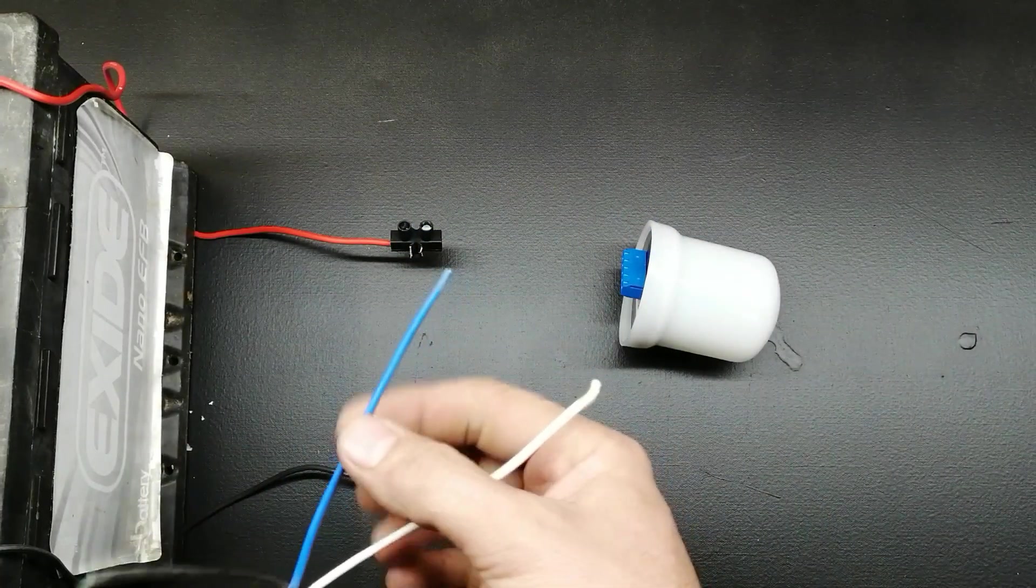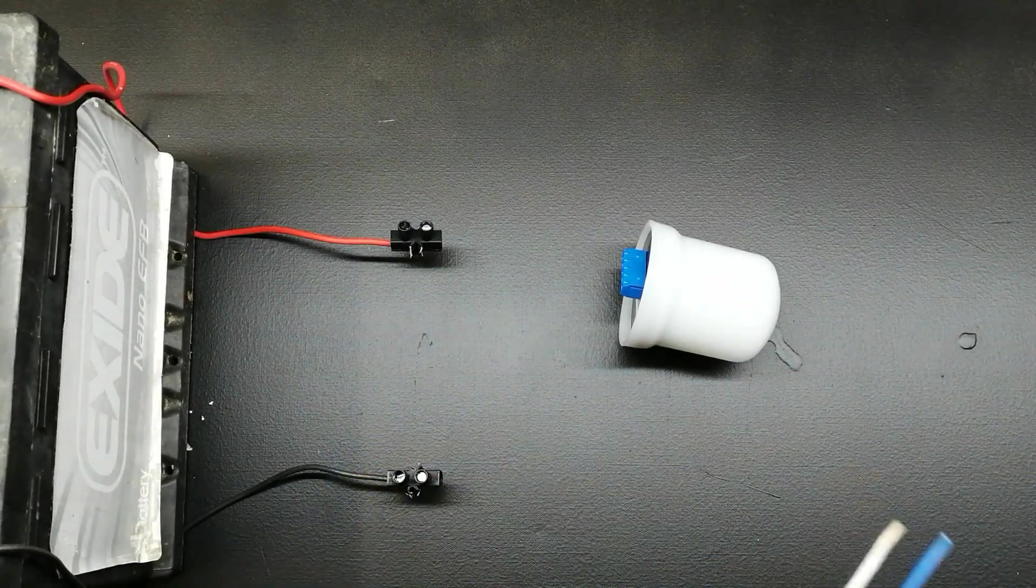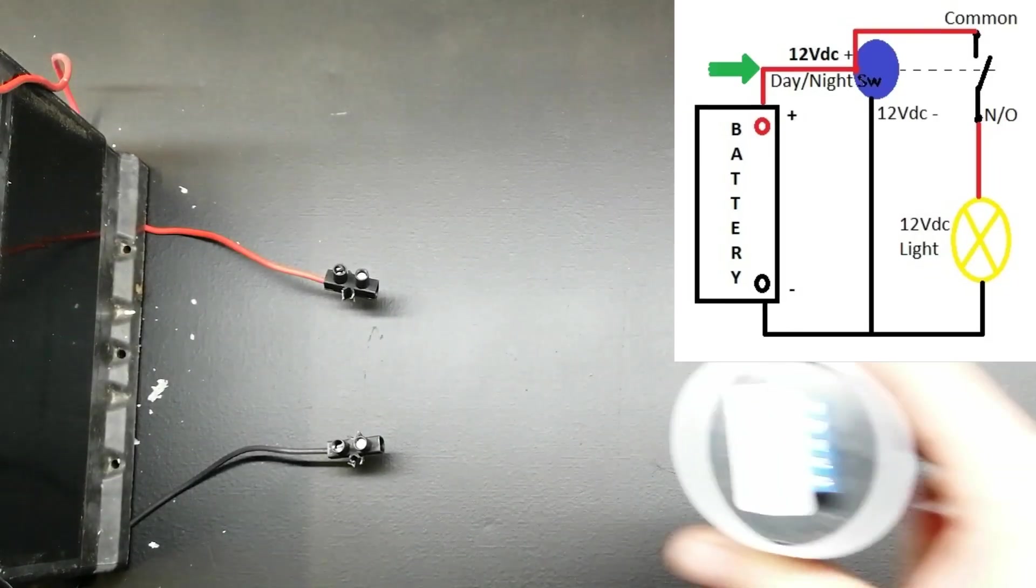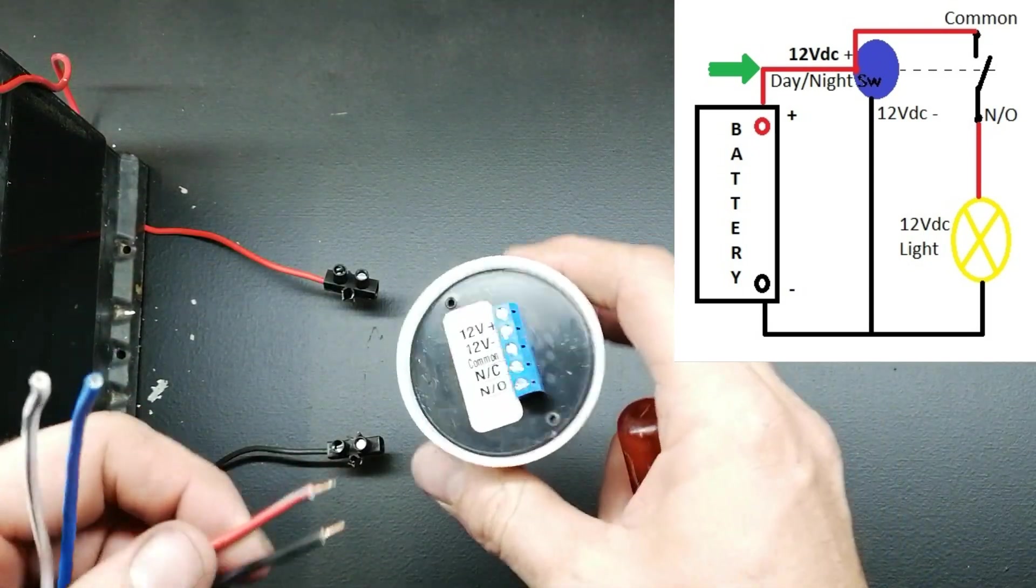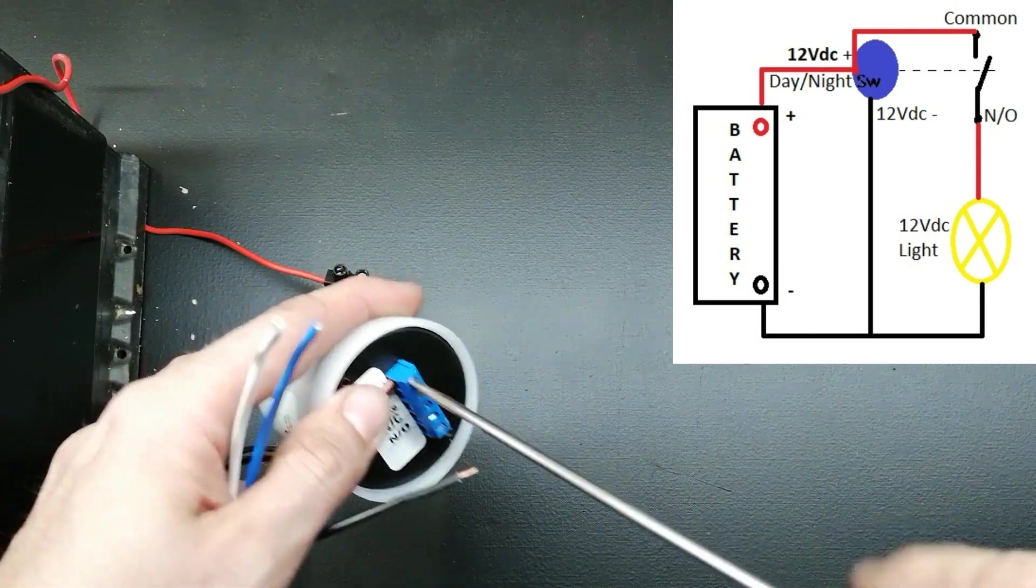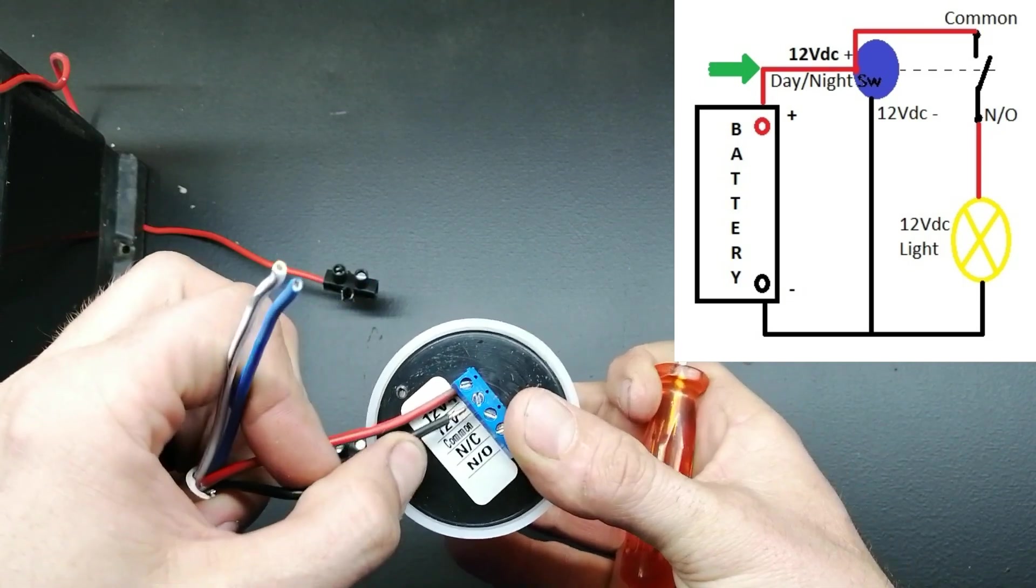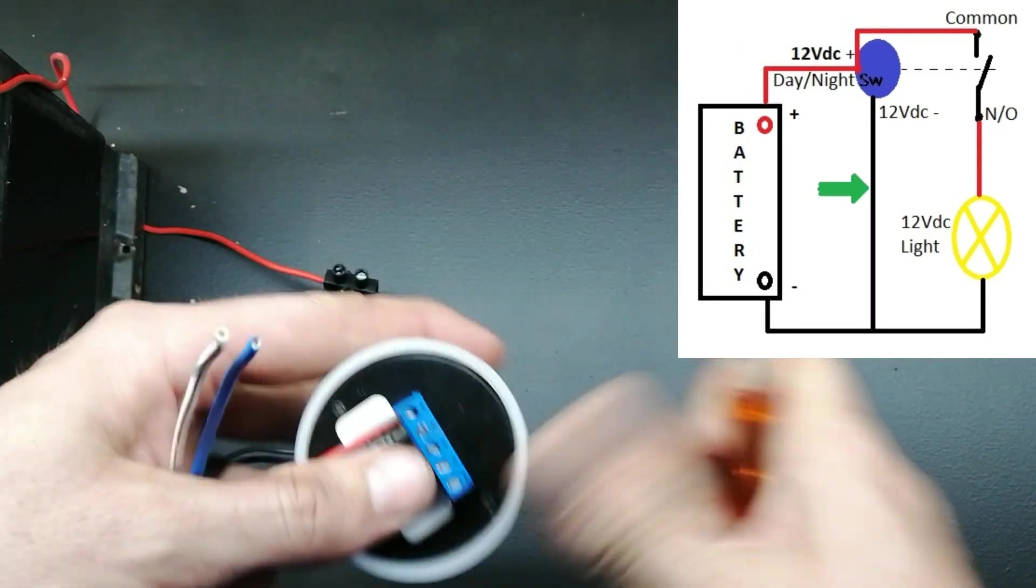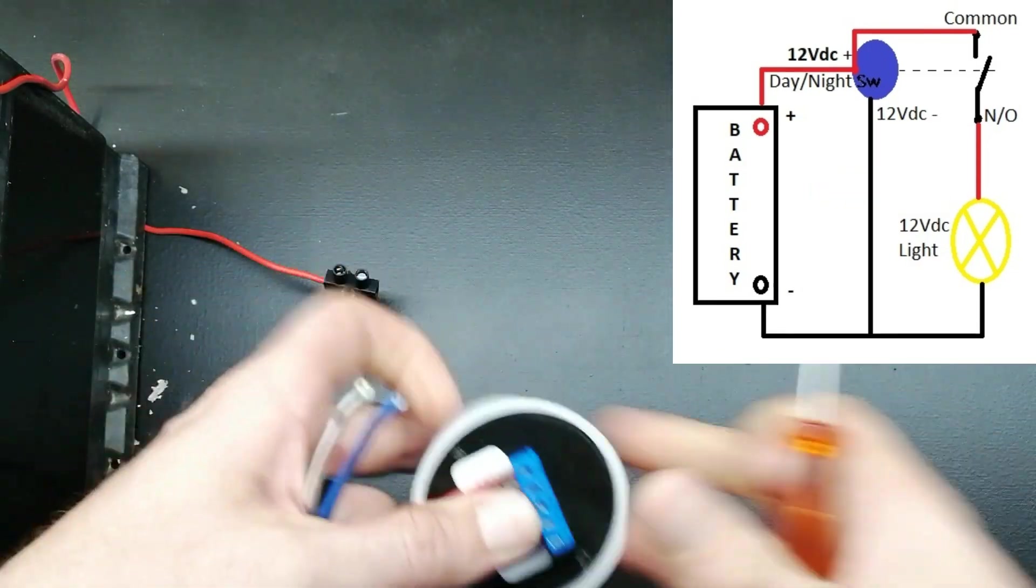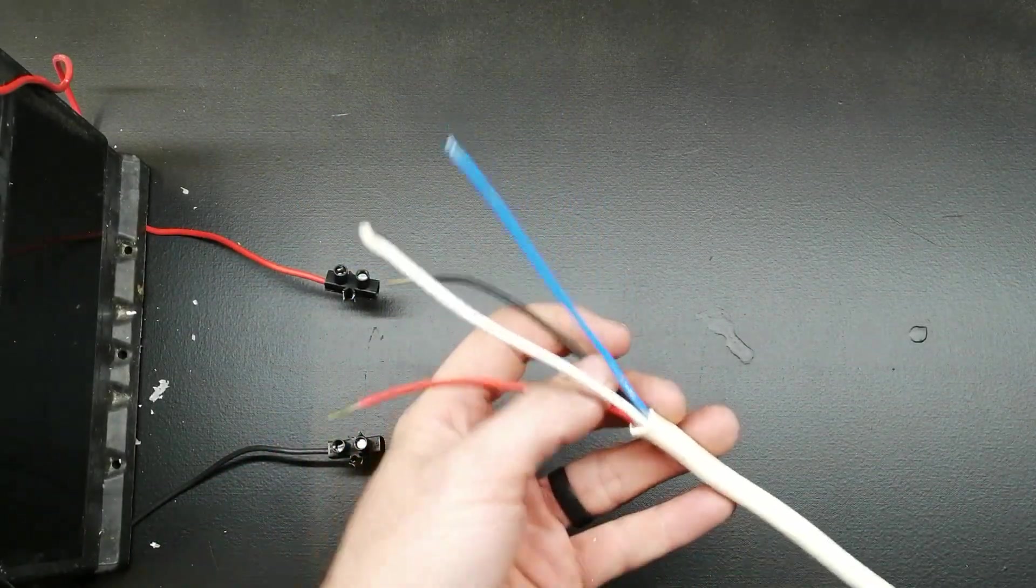And then for the blue and the white, I'm going to use it to switch on a 12V DC light strip that I have. Okay, let's start connecting. Now for my positive, 12V positive, the red wire goes in there. And then the black wire is the negative, 12V negative minus. And then the other side of this wire goes to the positive and negative on my battery.